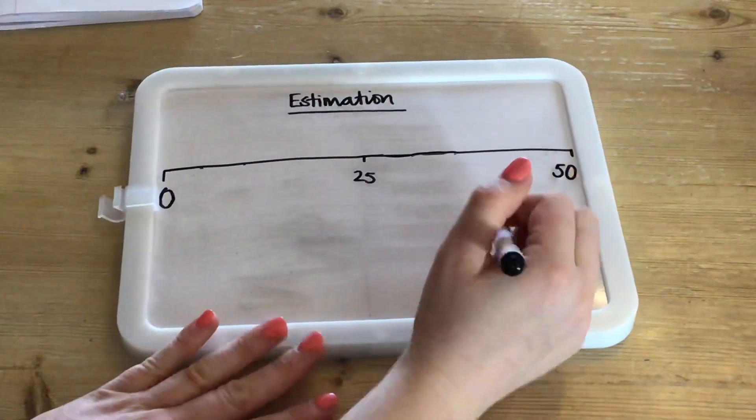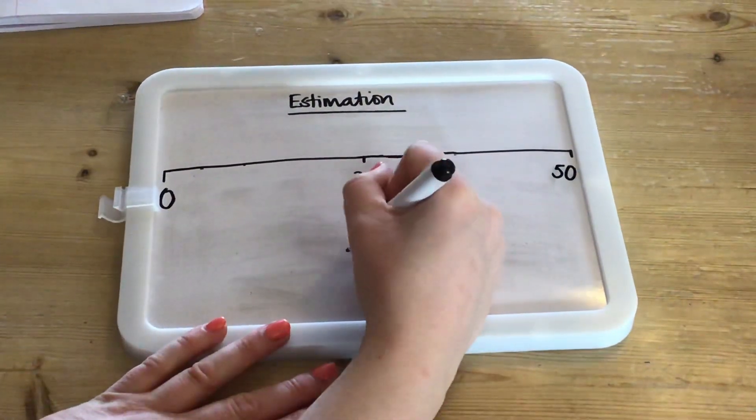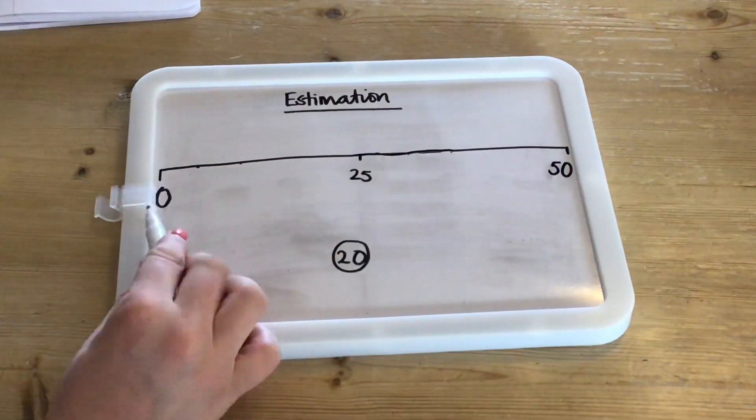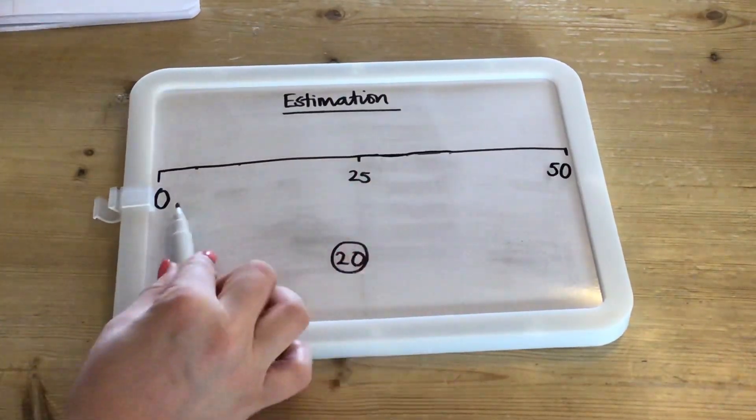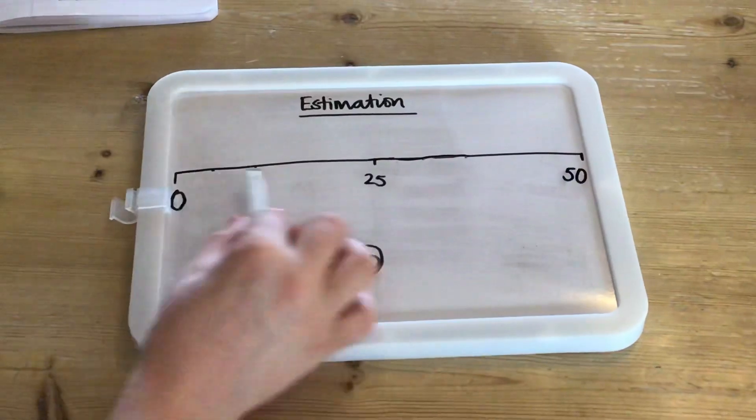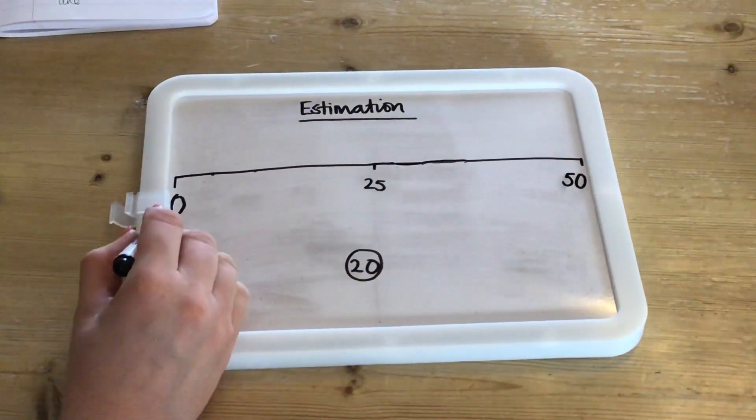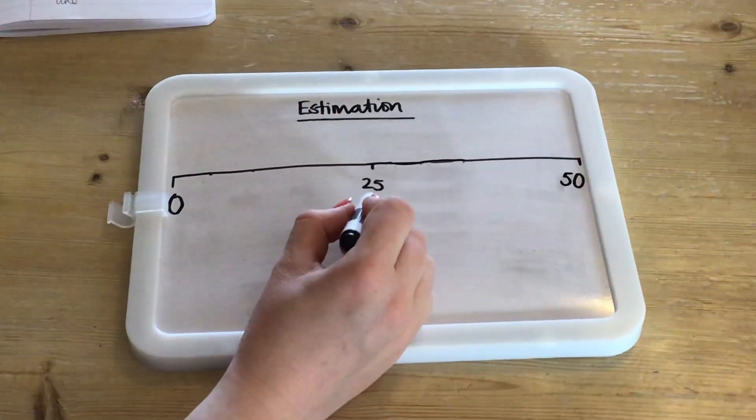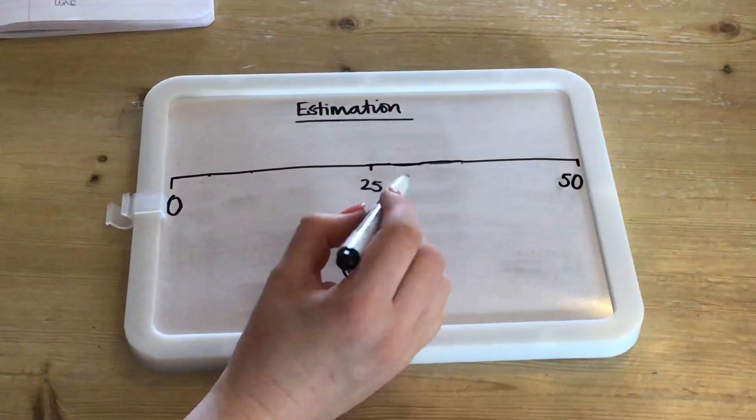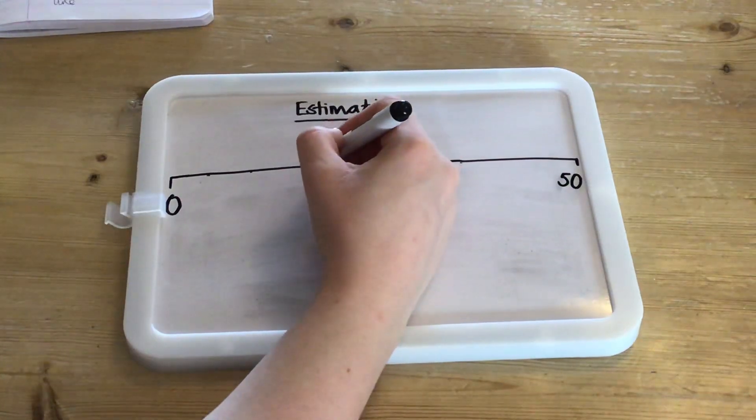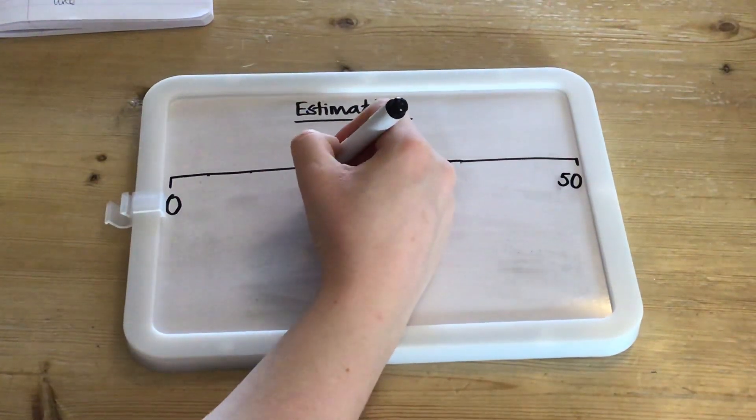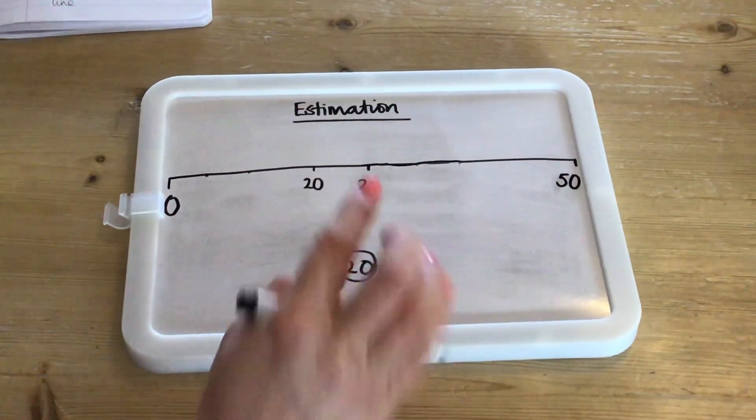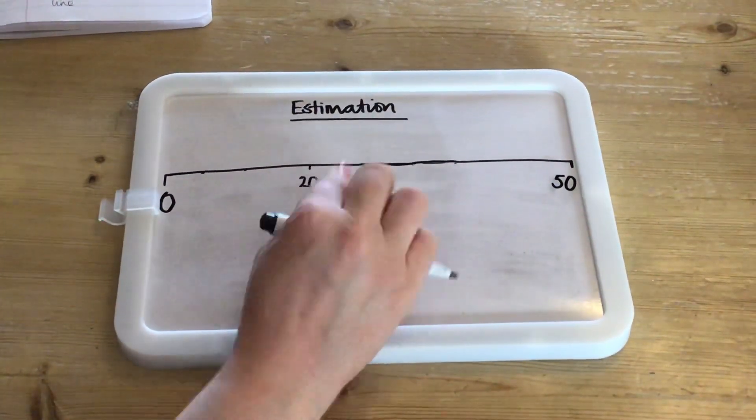Now I'm going to think about where 20 should go on my number line. We know that 20 should go between 0 and 25 because it is less than 25. Think about whether it should go closer to 0 or closer to 25. Now it will go closer to 25 and it will be fairly close so it should go around there, leaving enough space for the 5 in between 20 and 25.